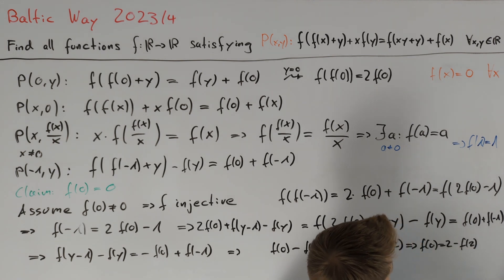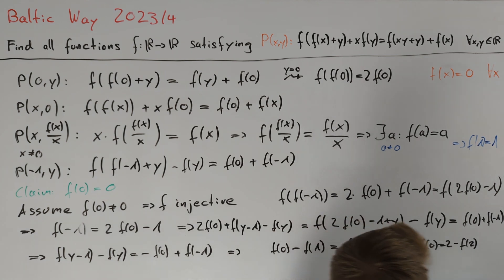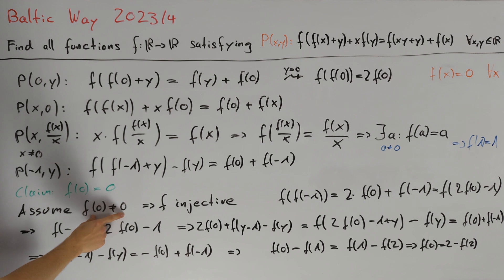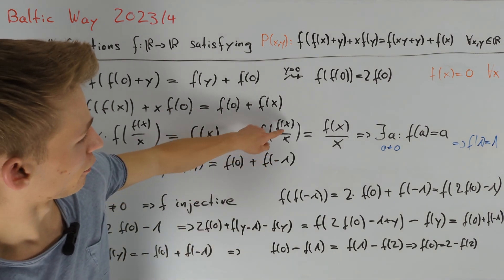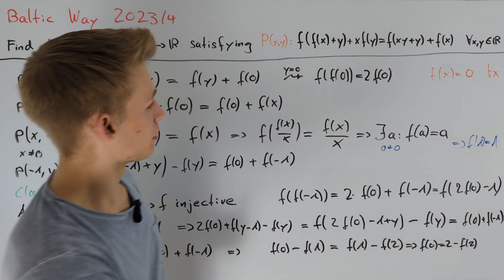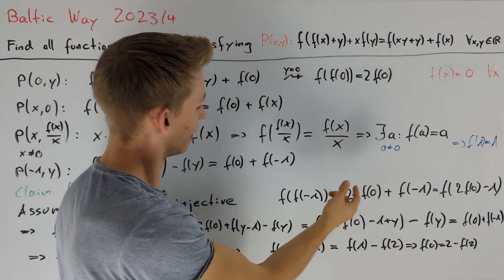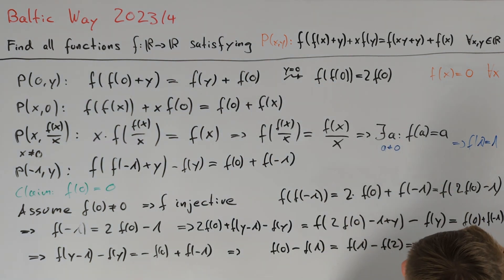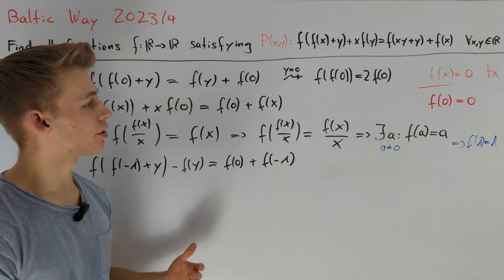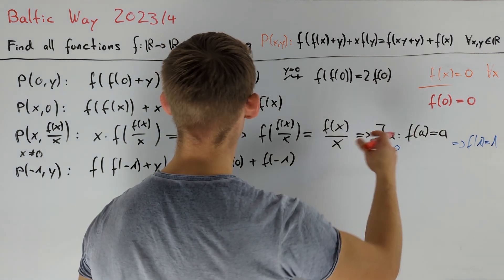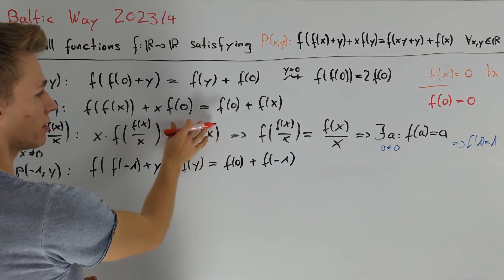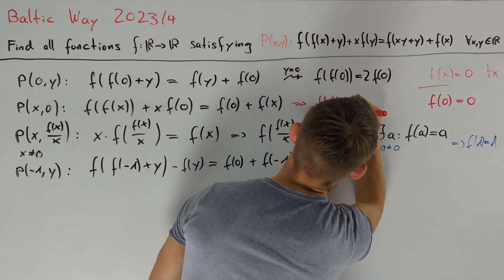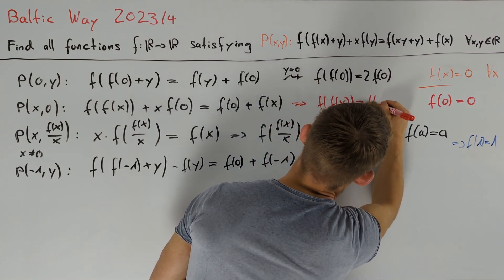It remains to show f(2) = 2. Since we assumed f(0) ≠ 0, we can plug f(0) into the equation and use the first equation to see that f(2) = 2. This gives f(0) = 0, a contradiction. We finally obtain f(0) = 0, and can use it in our equation to conclude that f(f(x)) = f(x).